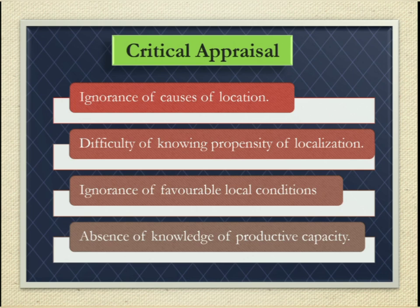Third, ignorance of favorable local conditions: the theory does not account for the favorable local factors influencing the centralization of industries. Fourth, absence of knowledge of productive capacity: the theory emphasizes the number of workers in calculating the index and coefficient, but ignores production.